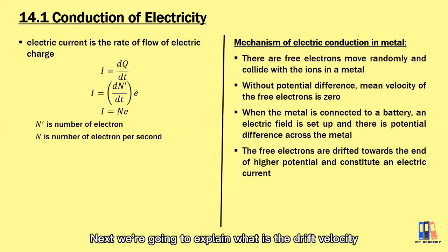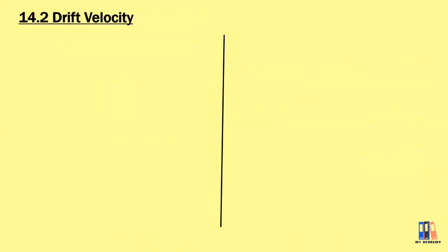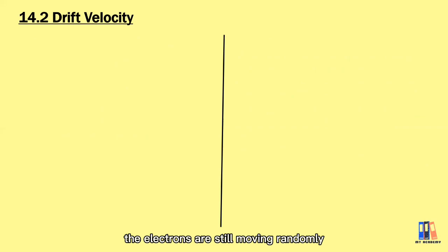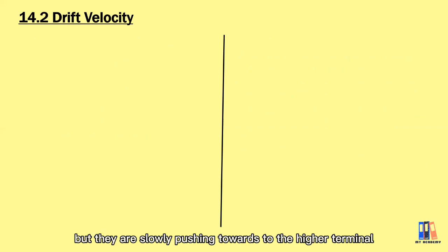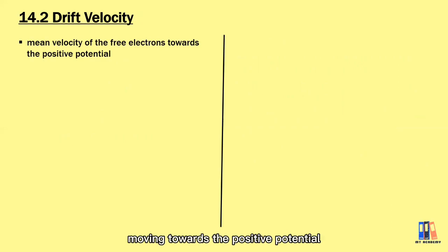Next, I will explain what drift velocity is. With the electric field, the electrons still move randomly but are slowly pushed towards the higher potential terminal. Drift velocity is defined as the mean velocity of the electrons moving towards the positive potential.